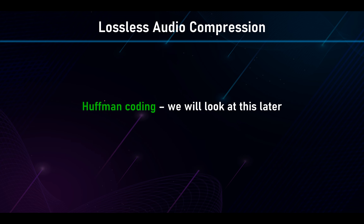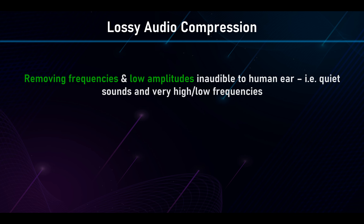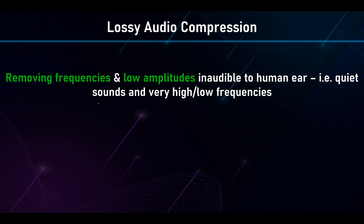For audio, lossless audio compression can use Huffman coding — we'll look at that later since it's predominantly used for text, but it can also be used for other formats since every file is just zeros and ones. For lossy audio compression, one approach is to remove frequencies and low amplitudes that are inaudible to the human ear. The human hearing range is generally 20 Hz to 20,000 Hz, so anything below 20 Hz or above 20,000 Hz can simply be deleted.